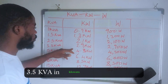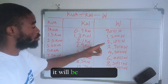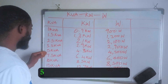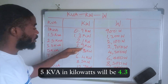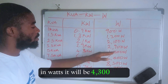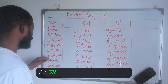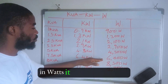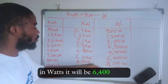3.5 kVA in kilowatt will be 2.9, and in watts it will be 2,900 watts. 5 kVA in kilowatt will be 4.3, and in watts it will be 4,300 watts. 7.5 kVA in kilowatt will be 6.4, and in watts it will be 6,400 watts.